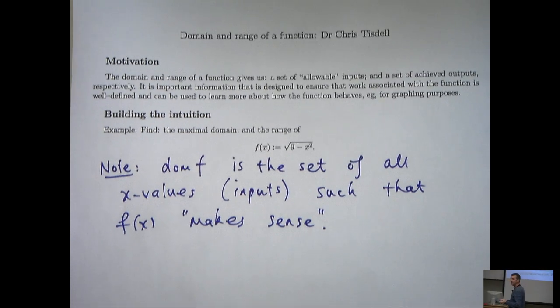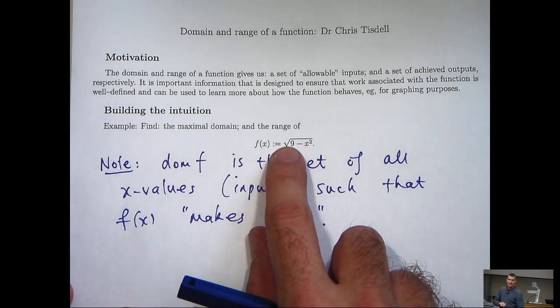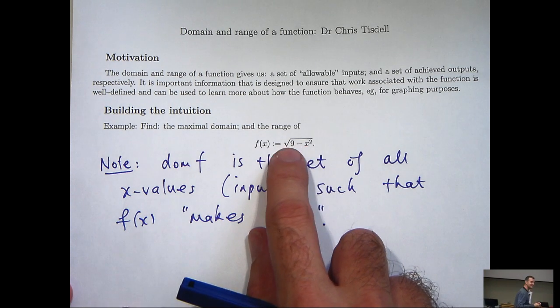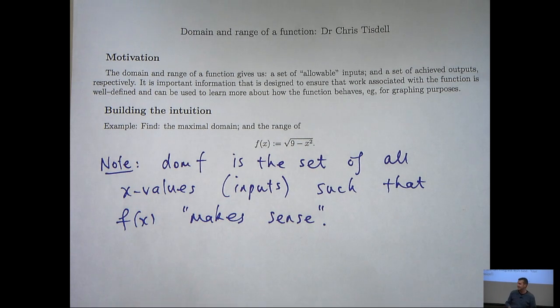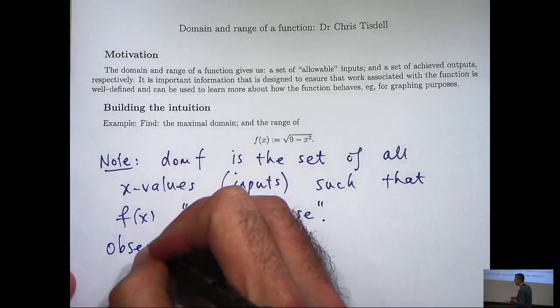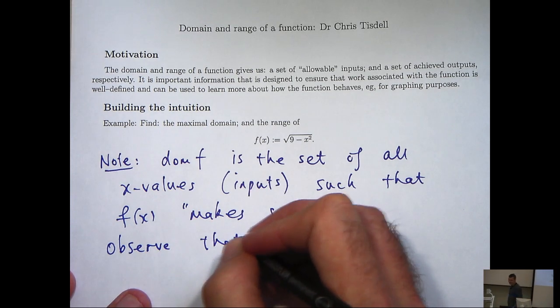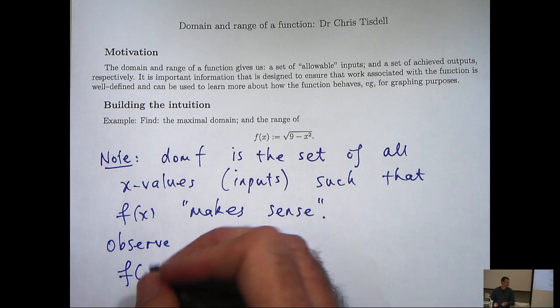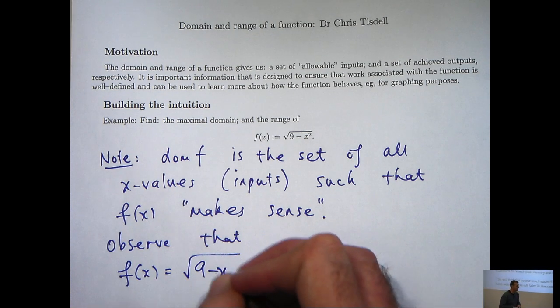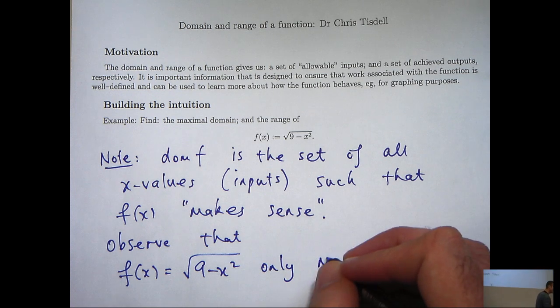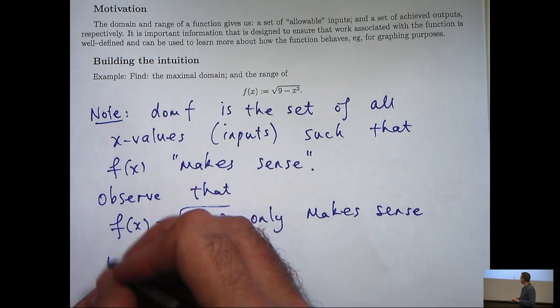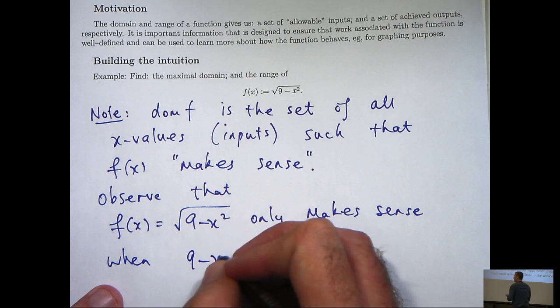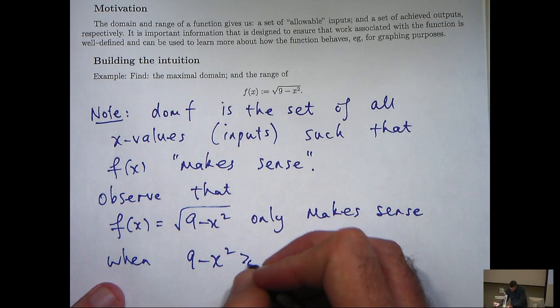How can we do that? Well, the first thing we notice is that the square root of 9 minus x squared only makes sense when 9 minus x squared is greater than or equal to 0 because we're dealing with real valued functions and we can't take the square root of a negative value. So, firstly, observe that our function only makes sense or is well defined when the expression inside the square root sign is greater than or equal to 0.